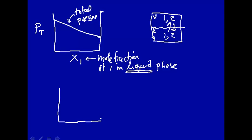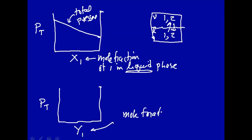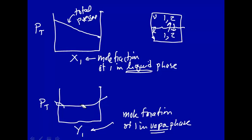Now what we want to do is construct the same kind of pressure-composition phase diagram, but instead of plotting total pressure versus mole fraction in the liquid phase, we want a plot of total pressure versus mole fraction in the vapor phase. We use the symbol y to denote the vapor phase. It's a two-component system, so the mole fraction of component 2 is simply one minus the mole fraction of component 1.